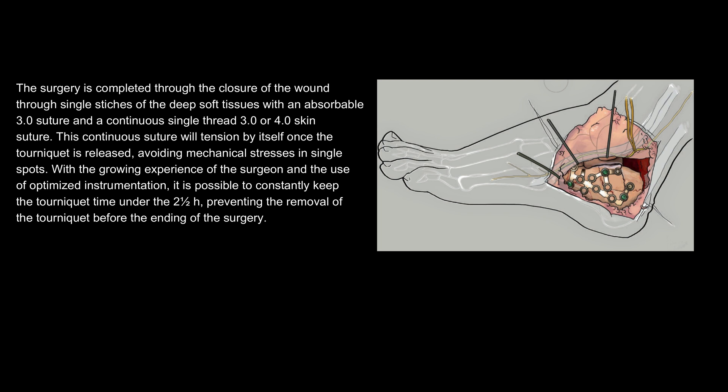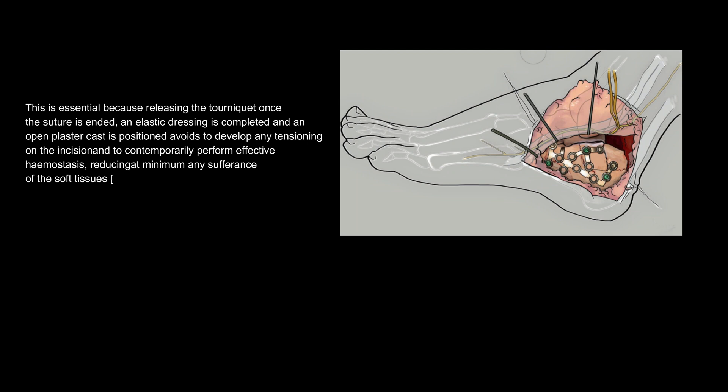With the growing experience of the surgeon and the use of optimized instrumentation, it is possible to consistently keep tourniquet time to a minimum. Releasing the tourniquet once the suture is ended and applying an elastic dressing with an open plaster cast avoids any tensioning on the incision while contemporaneously performing effective hemostasis, reducing at minimum any suffering of the soft tissues.